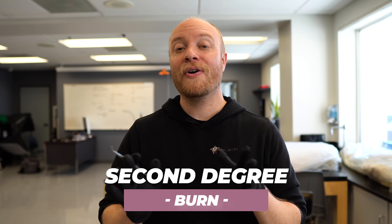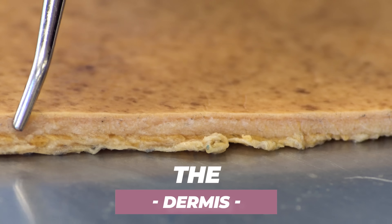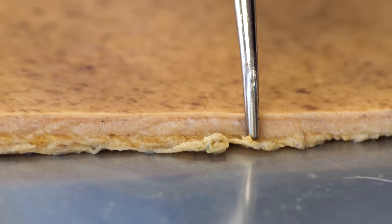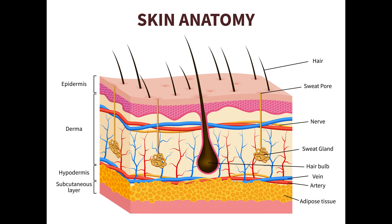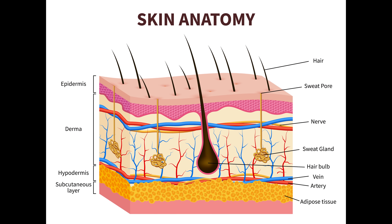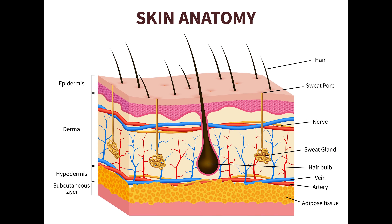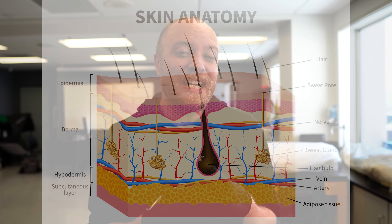Second-degree burns are a completely different story, because inside the dermis — the second layer down — you're going to find a lot of interesting structures such as blood vessels, nerve endings, sweat glands, hair follicles, and tiny muscles that move the hair follicles. It's a very busy area, and now the burn is starting to damage and destroy the structures inside of it.